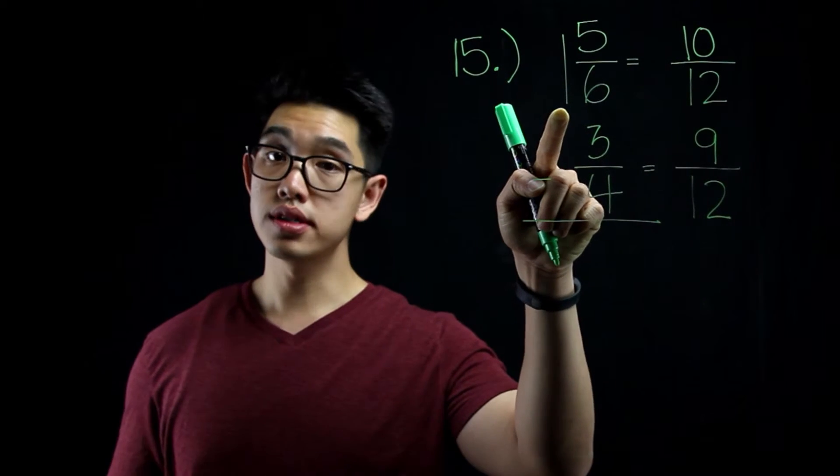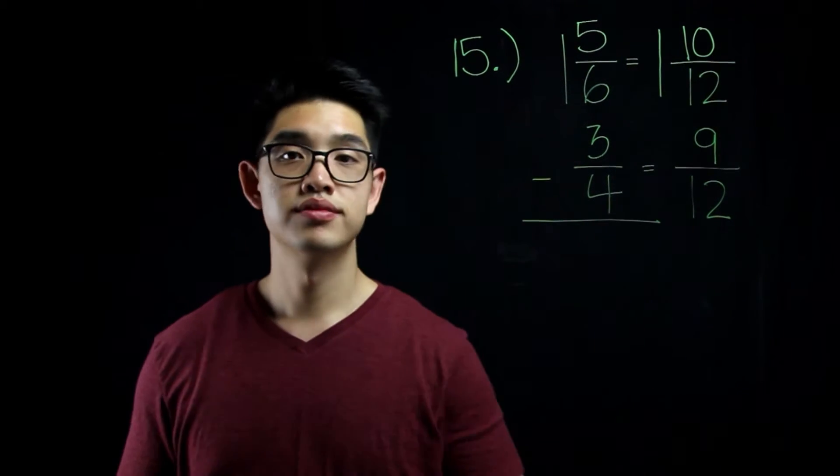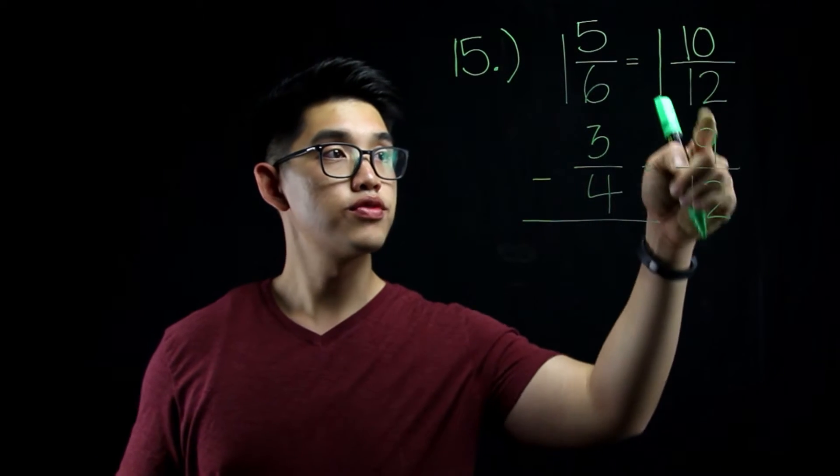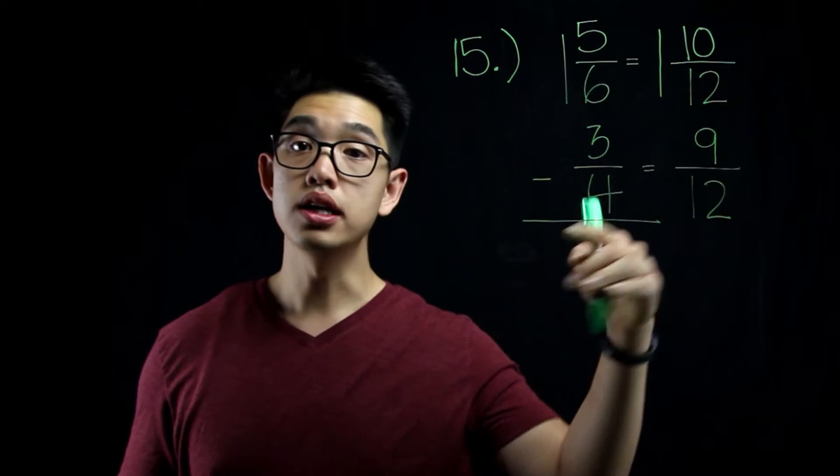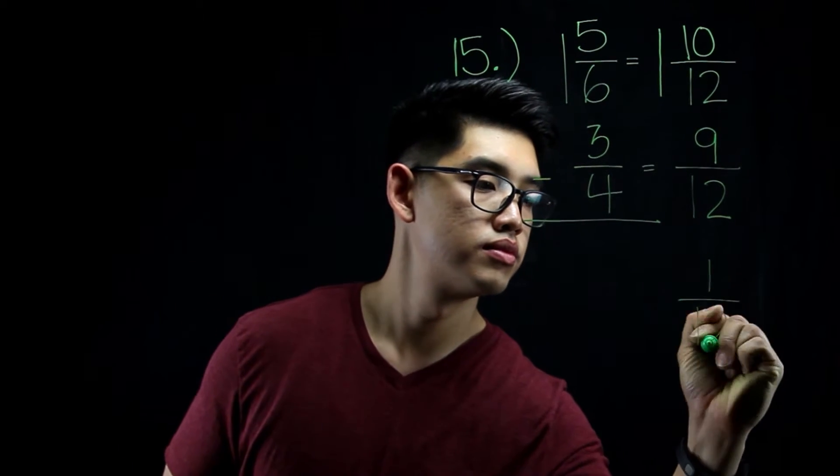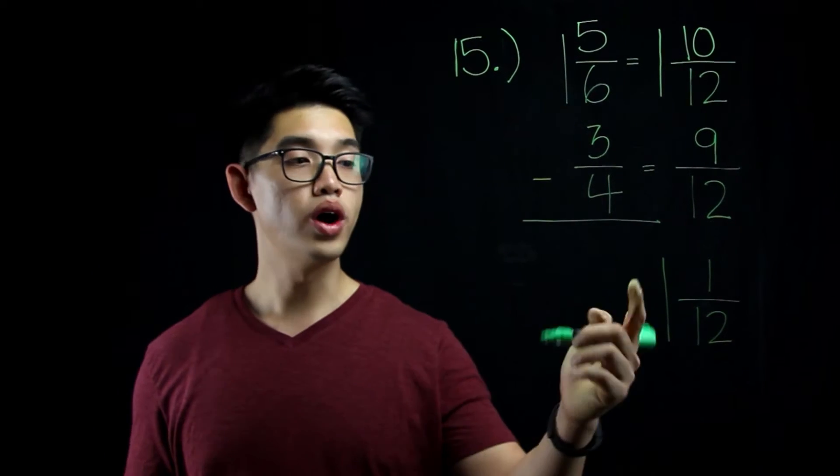The 1 right here is still the same, so I'm still going to write 1 right here. Now, I can subtract the numerators from each other. 10 minus 9 equals to 1. Your answer is 1 and 1 twelfth.